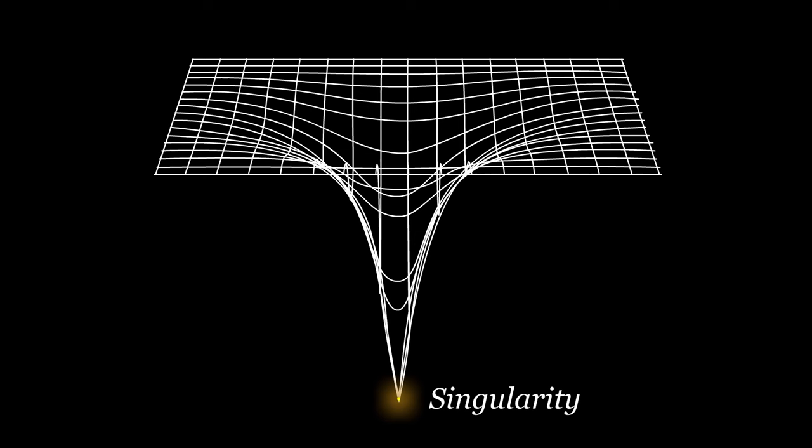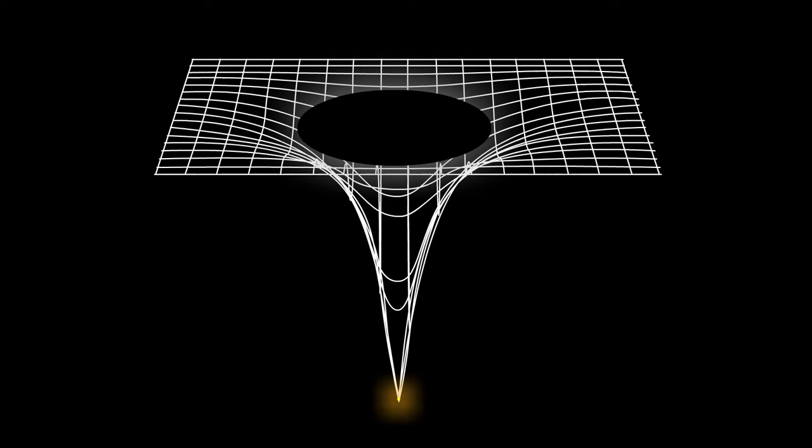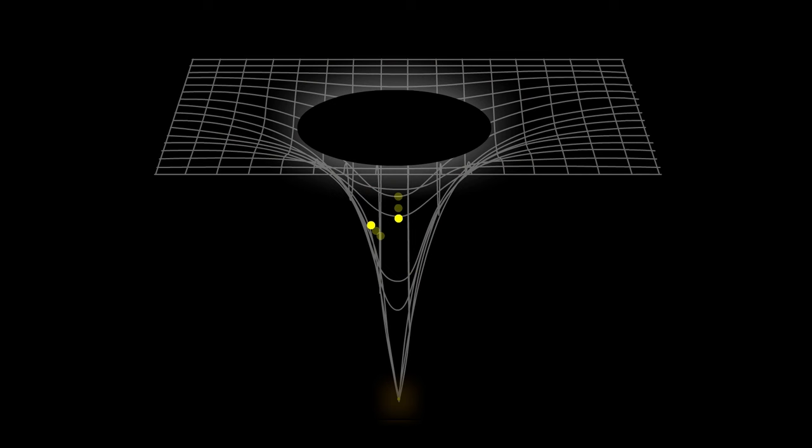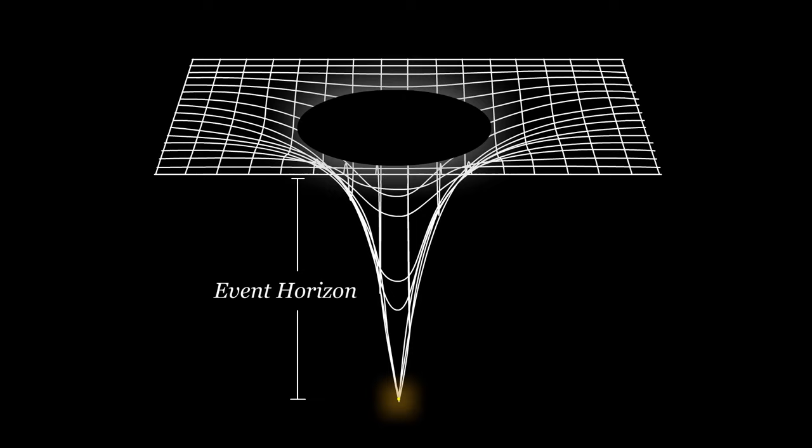The star becomes a black hole because a singularity distorts the space-time around it so severely that any light which falls into the pit is held captive forever. Nothing escapes. The boundary where the pit begins is known as the black hole's event horizon.